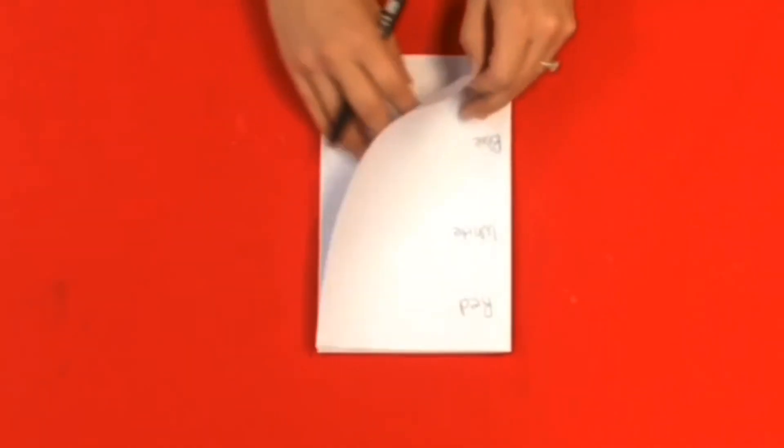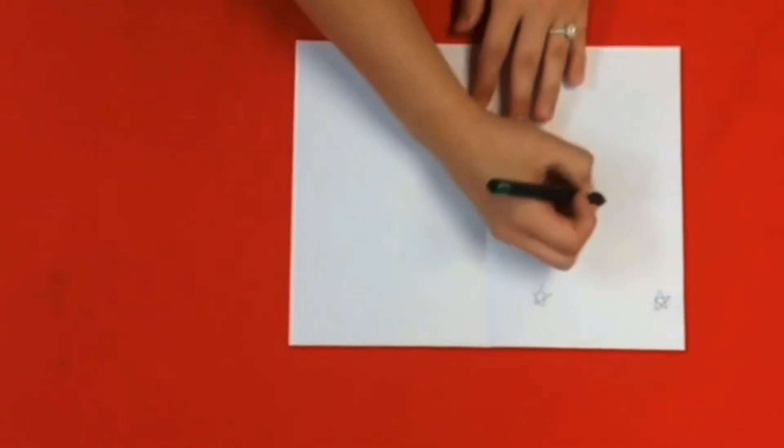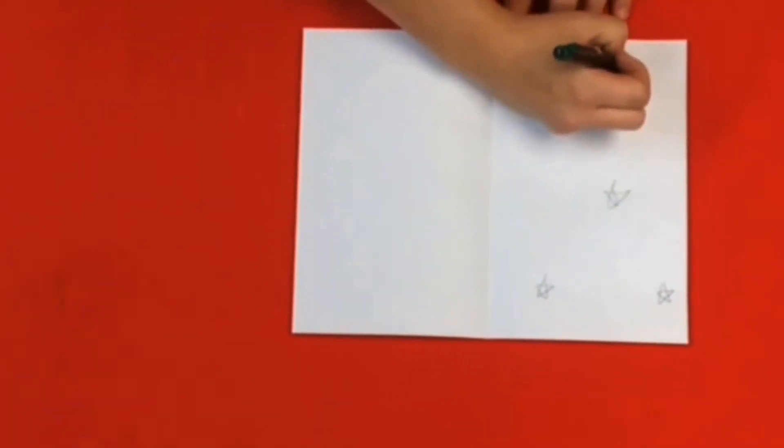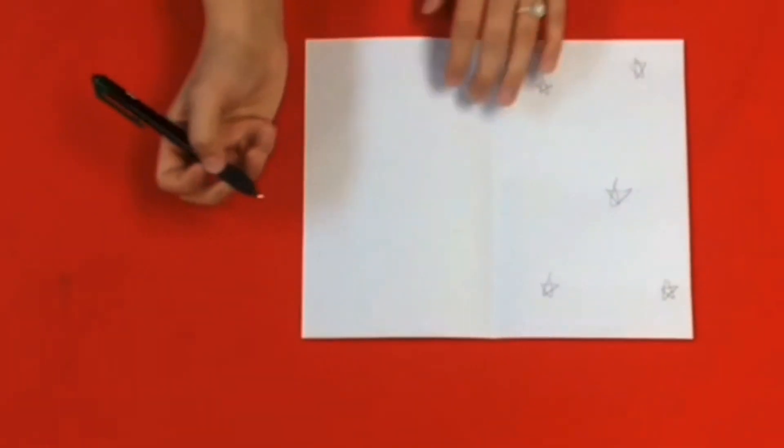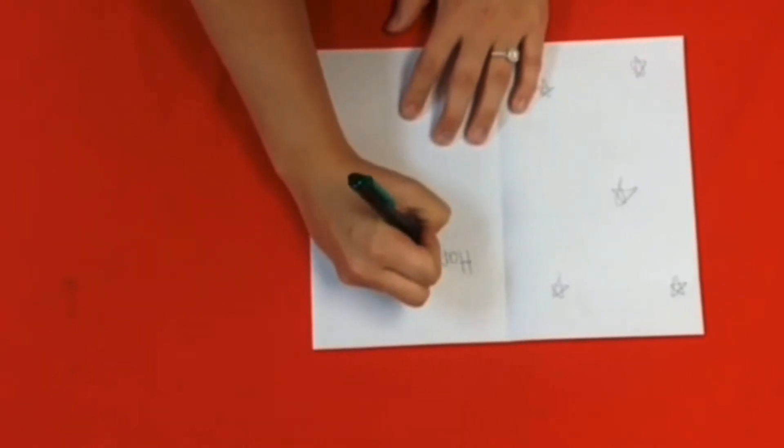So then when I flip inside my card, I would like some stars all over. And then I'm going to write happy 4th of July on the inside.